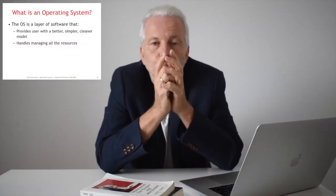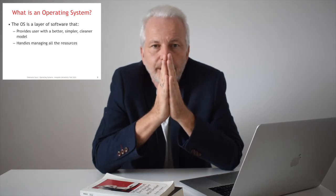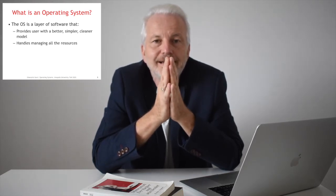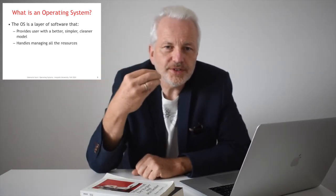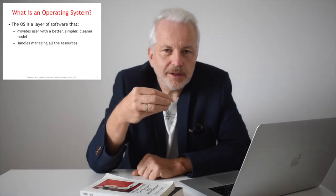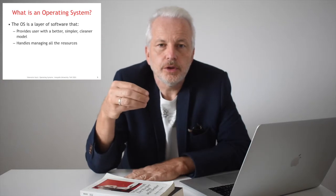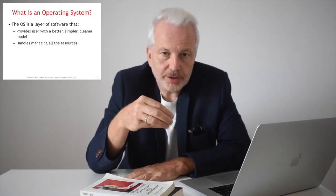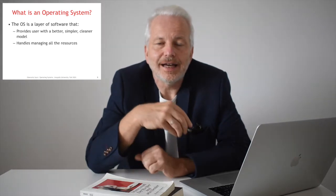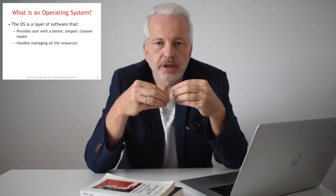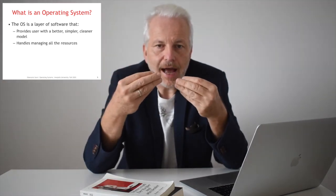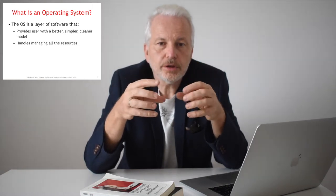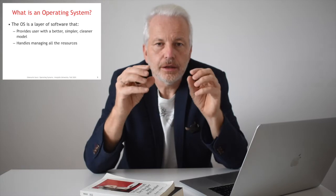We start by defining what is an operating system. Operating systems are present everywhere, so you may already have some idea of what one could be. An operating system is a piece of running software — a process — which acts as an interface between the operator and the hardware, acting as support to execute programs.